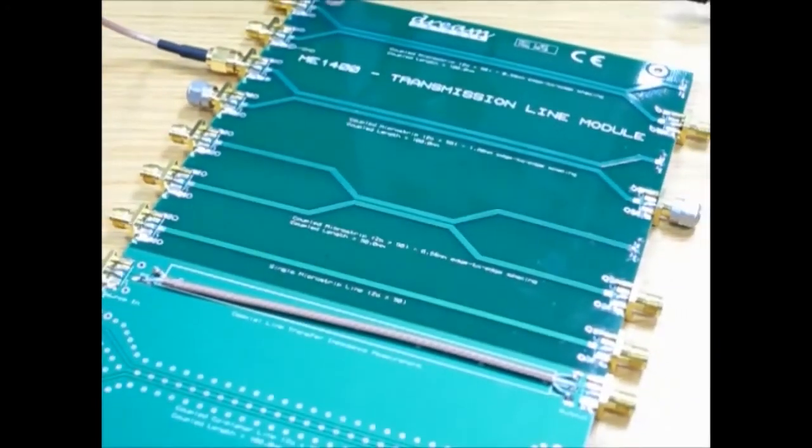Now we are changing to another coupled microstrip with bigger edge-to-edge spacing of 1.2 mm, about double the spacing of the earlier lines. And with the same high-speed pulse, we will see how it changes the crosstalk level.